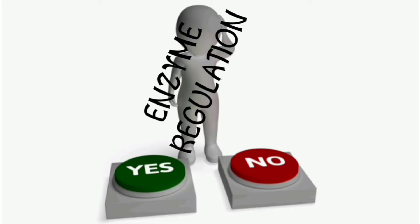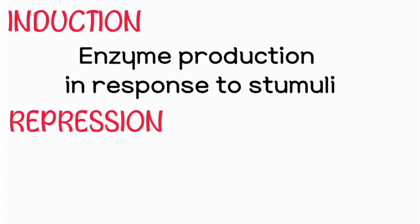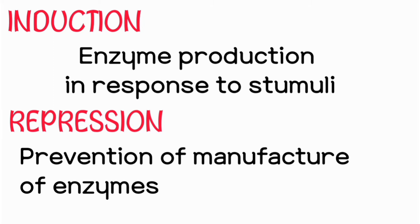Enzyme regulation can be in two ways: it could be to increase the activity of the enzyme, where it's called enzyme activation, or it could be to reduce it, where it's called enzyme inhibition. There is also enzyme induction and repression, but these are mainly found in bacteria. Enzyme induction happens when an organism encounters a stimulus and reacts by producing more of an enzyme — increasing the number of enzymes rather than catalytic activity. Repression is the opposite: decreasing the number of enzymes after the stimulus has gone or decreased.